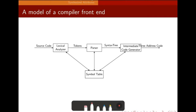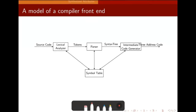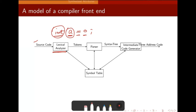Before we move further, we need to understand how things work. We are giving source code as input to the lexical analyzer. The lexical analyzer splits the code into smaller parts. For example, if you have written 'int a = 0', then 'int' will be treated as one unit, 'a' as another, '=' as one, and '0' as another. Each of them will be treated as a token.